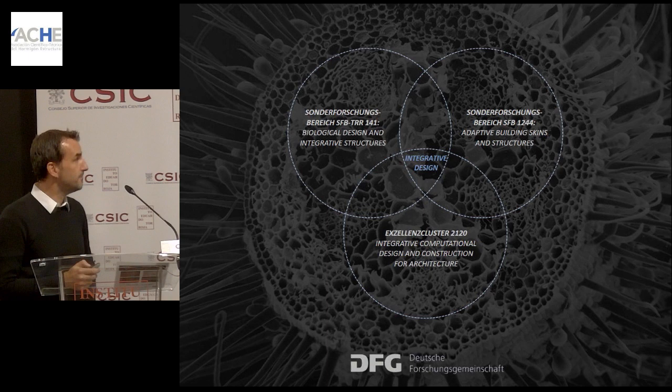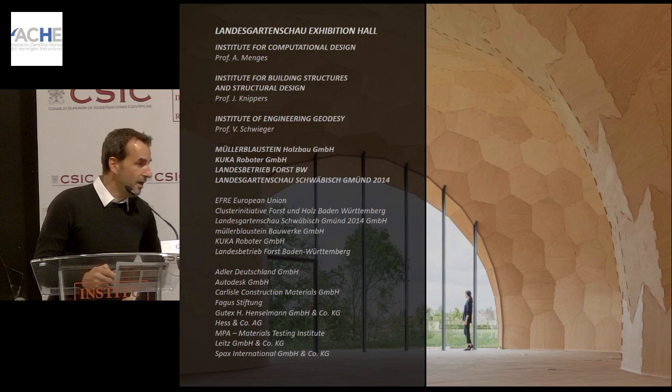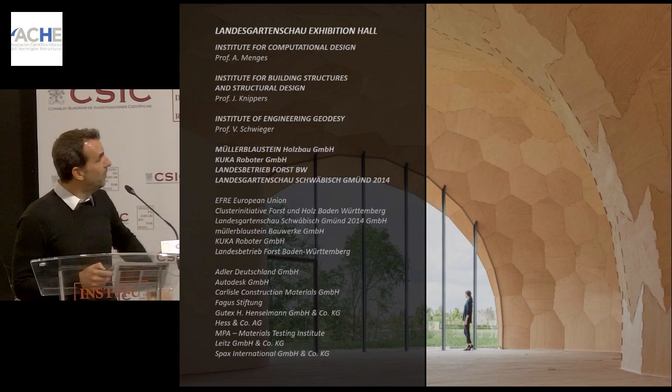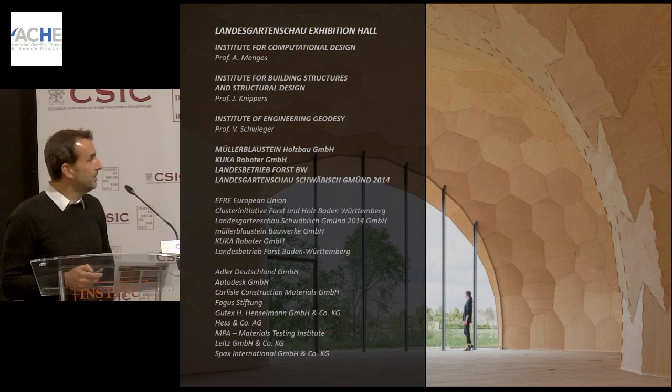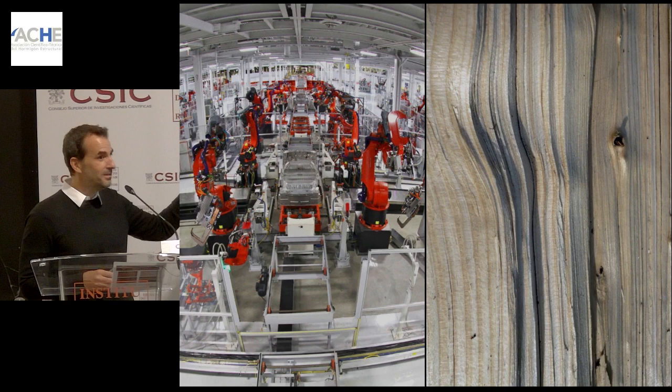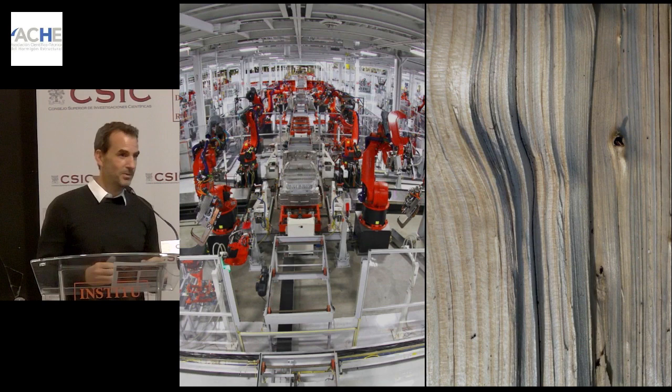The first project is a small exhibition hall completed in 2014, the result of a research project at the Institute of Young Knippers and myself, along with a geodesy colleague. It looked at how we can use the two resources local to Stuttgart: advanced production technology — basically robotics for production — and wood, because in the south of Germany there's no other naturally occurring resource.